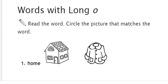Words with long O. Read the word, circle the picture that matches the word. So you're going to read this word right here, and you're going to circle the picture. This word said home, so you would want to circle the picture of the home. Coat would be spelled C-O-A-T.